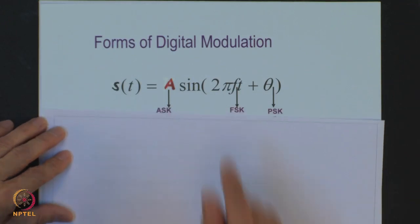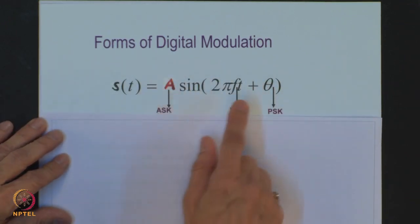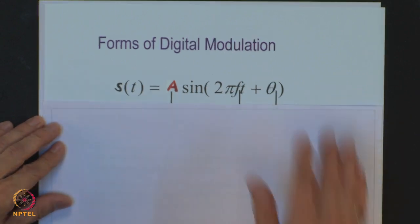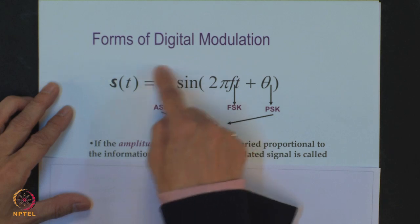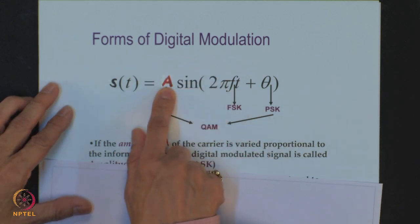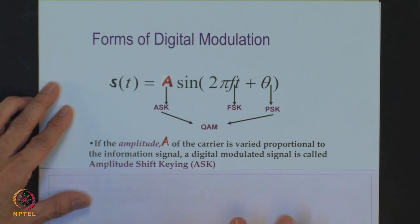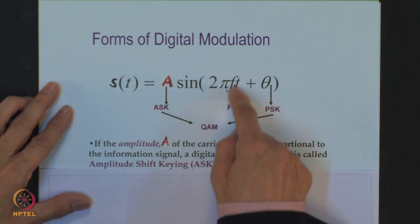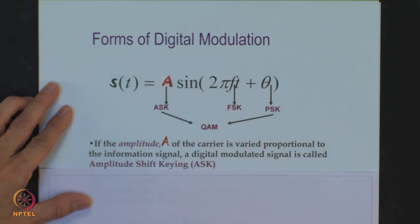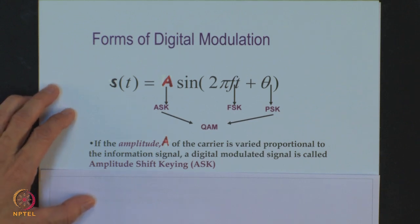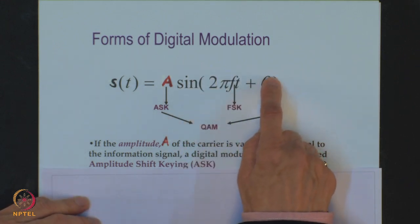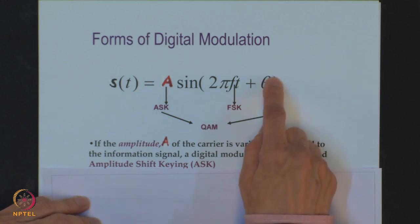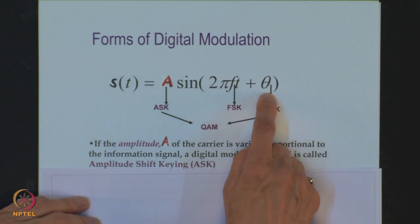Here is the carrier with the amplitude A, frequency F, and phase theta. If the amplitude A of the carrier is varied proportional to the information signal, then what we get is a digital modulated signal called amplitude shift keying (ASK). If the frequency of this carrier is varied, then we get what is known as frequency shift keying (FSK). And if the phase theta of this carrier is varied proportional to the information signal, then the digital modulated signal we get is what is known as phase shift keying (PSK).